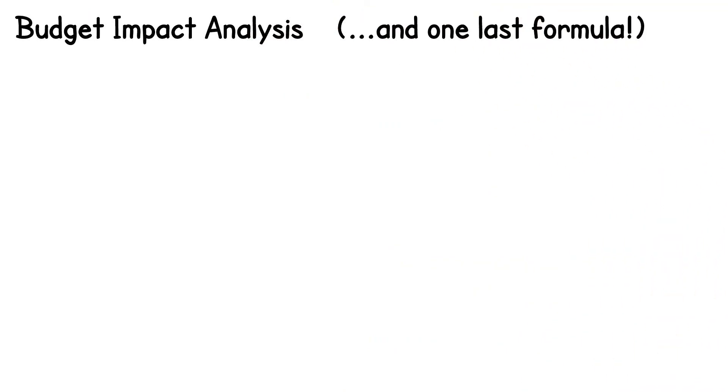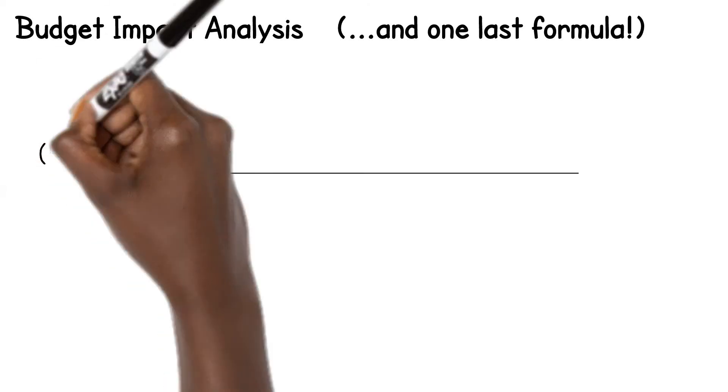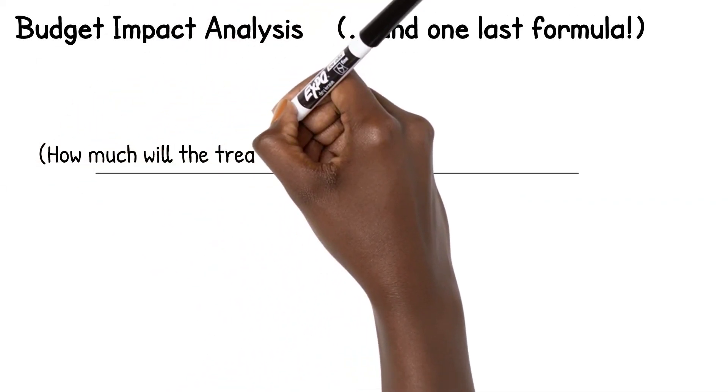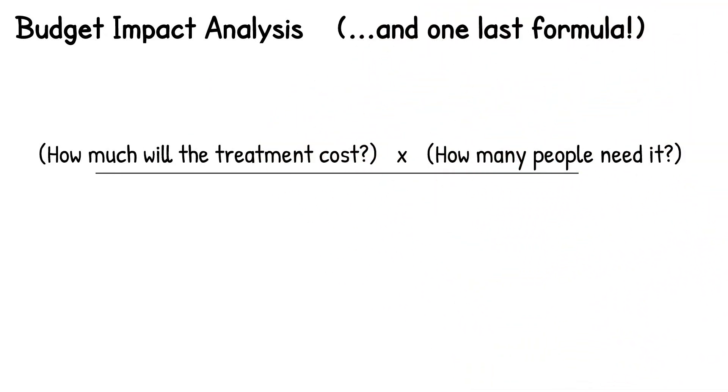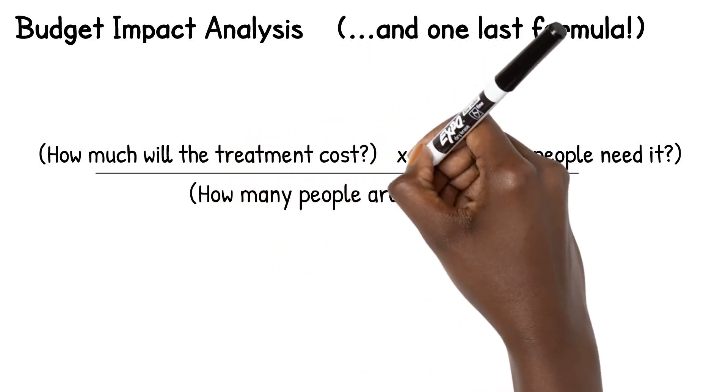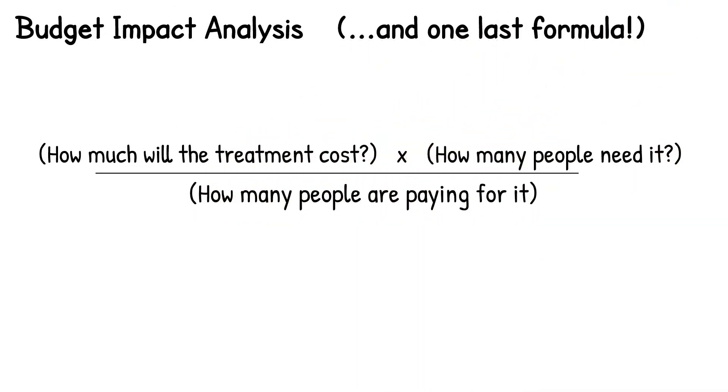I know, more formulas. So to know the impact of an intervention on a budget, we start with how much treatment will cost and multiply that by how many people will be affected by the condition, i.e., how many are going to need the treatment, divided by the total number of people helping pay for this.